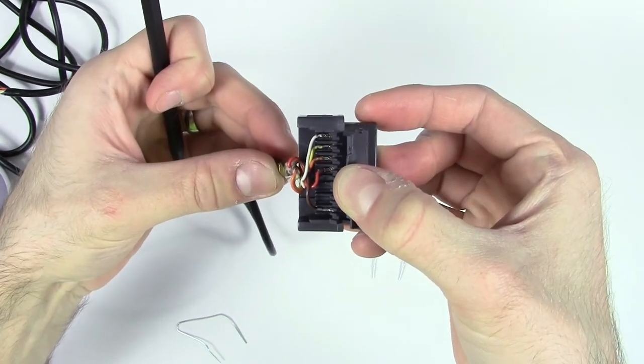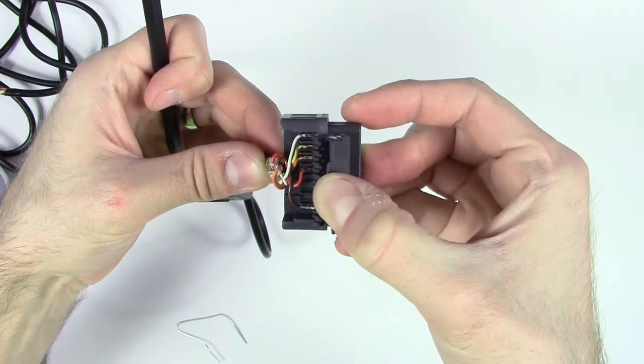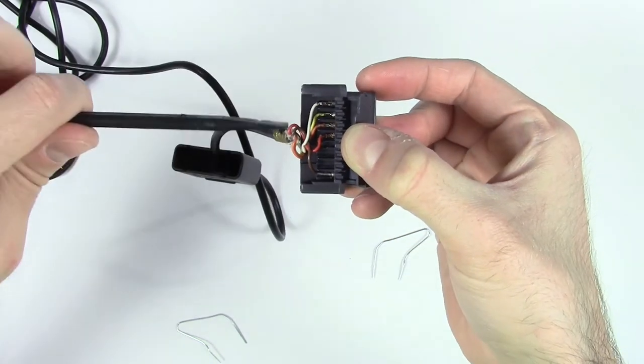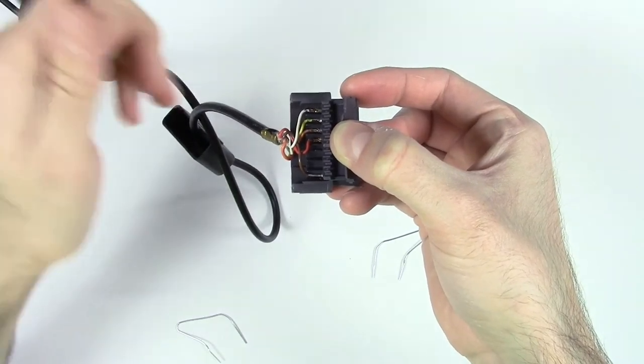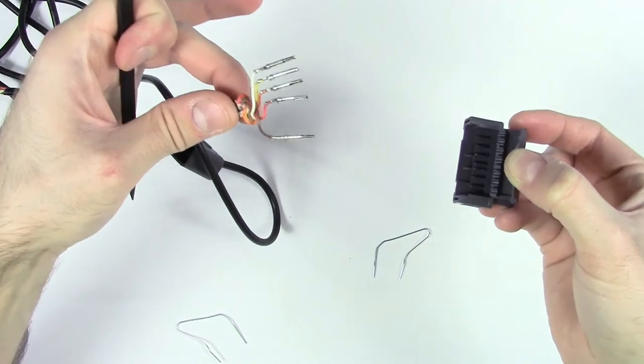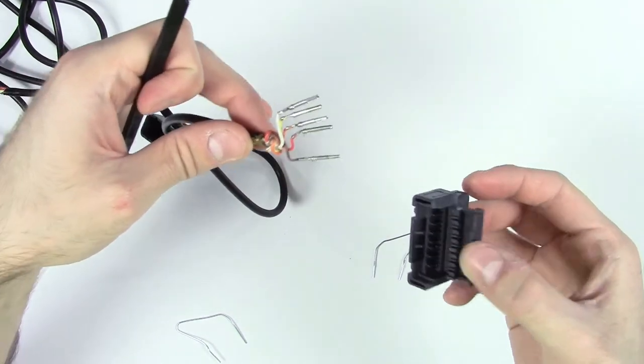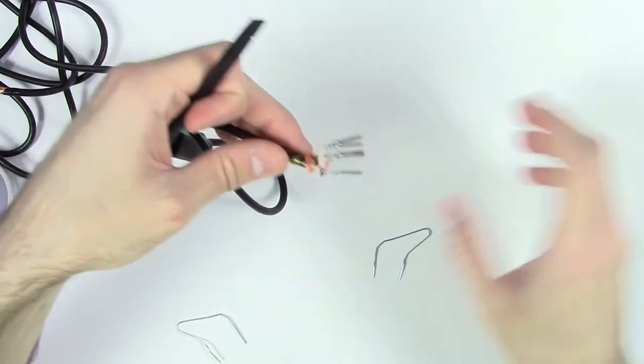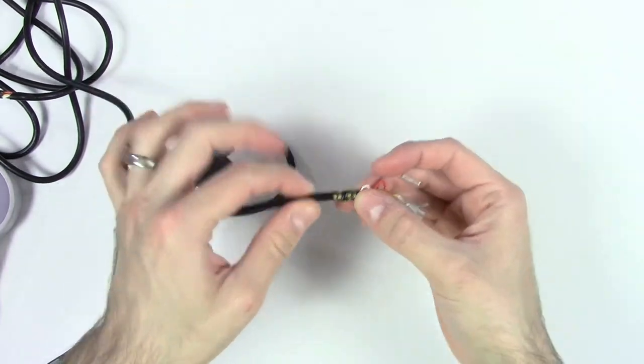Thankfully, the order that they're in is pretty much like the rainbow. So you can see on top we've got white, yellow, orange, red, and then a few blank spots and then brown on the bottom. These connectors all just slide in. It's super easy. You don't need any sort of fancy de-pinning tool or anything. Set it off to the side. The next thing we need to do now is deal with this metal strain relief.